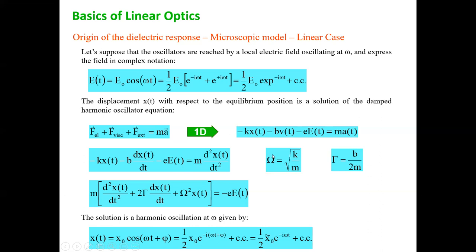Remembering that velocity is the first derivative of position and acceleration is the second derivative, I substitute to get the equation of motion. I introduce two specific constants: the intrinsic frequency Ω = √(k/m), which is typical of an oscillator, and the damping coefficient Γ = b/(2m), which accounts for losses. Using these definitions, I can write the equation in this cleaner form.